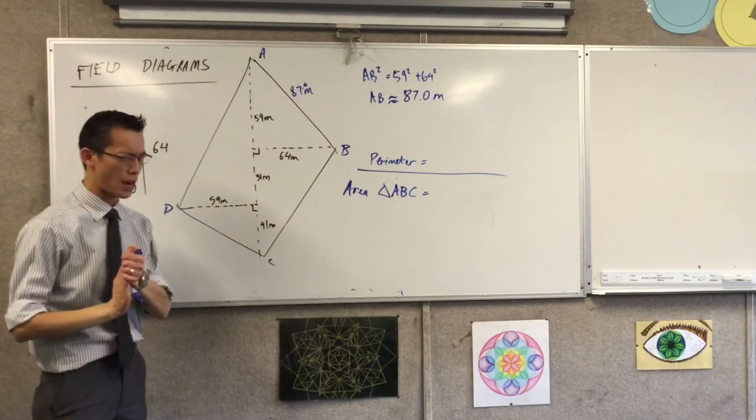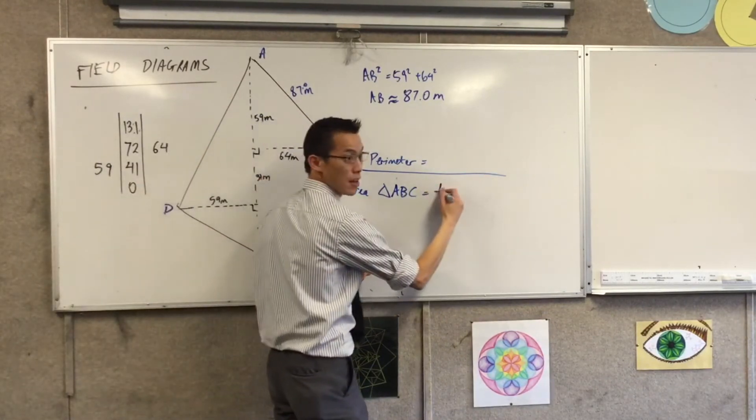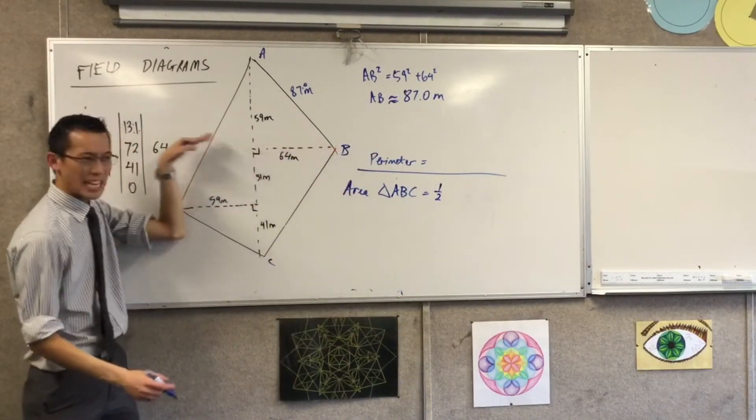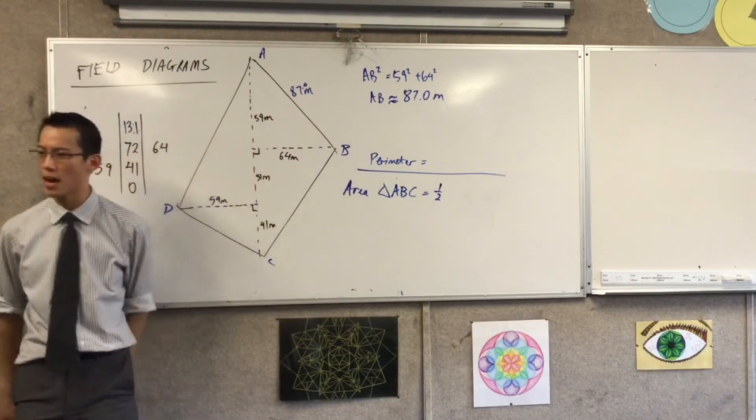What's the formula for the area of a triangle? Half? Base times height. Now, remembering that my height here, even though it's sideways, it has to be this one. Why does it have to be that one?